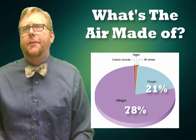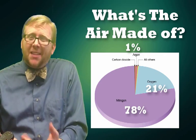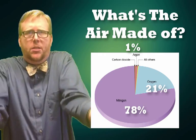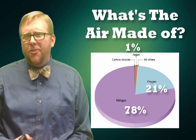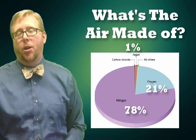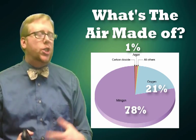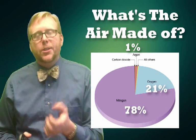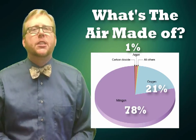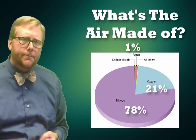What's left? 1%. In that 1%, the vast majority — about 0.9 of a percent — is something called argon, which, like nitrogen, is inert and doesn't do anything. And very, very little of it is carbon dioxide and everything else, all the other pollution. If you put all of the atmosphere into a giant pie chart, you can see that most of our atmosphere is made up of nitrogen and oxygen, with little bits of what's left.